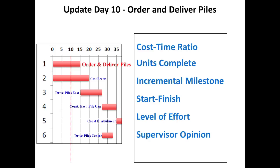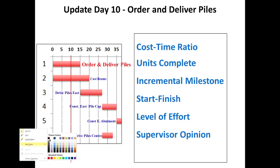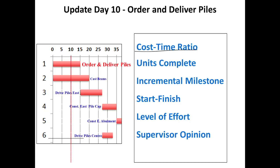Let us say we are on day 10 and we want to update the status of order and deliver piles. On day 10, we had put a question mark on the percentage complete. How will I actually measure percentage complete of order and deliver piles? One option is using the cost-time ratio — in this case, the time ratio. The activity duration is 15 days and 10 days are over, so the percentage complete is 10 by 15. You have to decide if that is a fair assessment. It might not be fair because we are assuming progress is proportional to time spent, which need not be the case. So this is not a very good indicator of percentage complete for this particular activity.